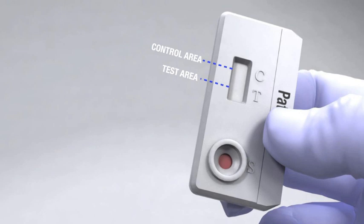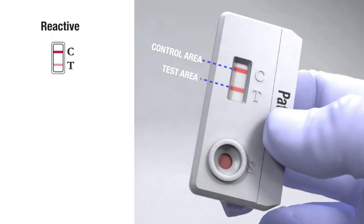Two pink-purple lines, one in the test area and one in the control area, indicate a reactive test result. The line in the test area may look different from the line in the control area. Intensities of the test and control lines may vary.